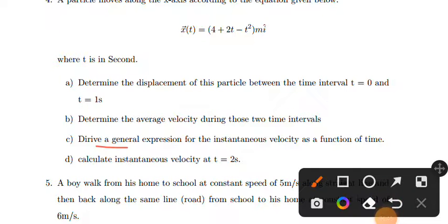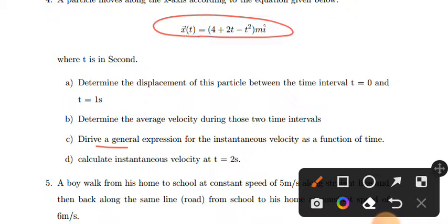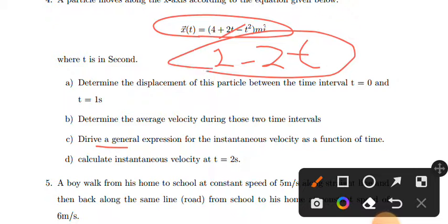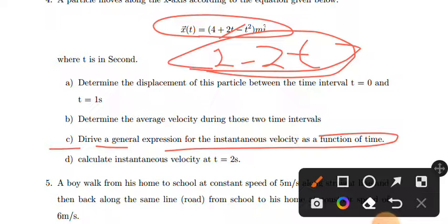Derive the general expression for instantaneous velocity as a function of time. The instantaneous velocity is the derivative of position with respect to time. This is the general formula — the derivative of the position equation.